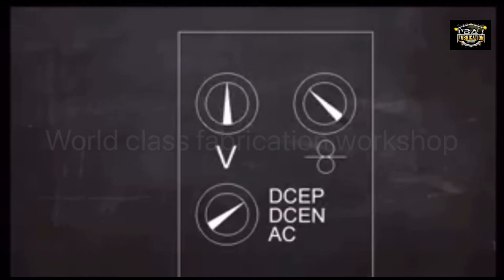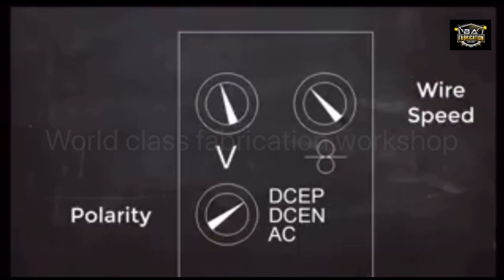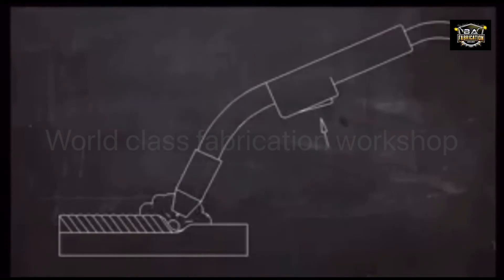In flux-core welding, all of the machine controls are set on the machine itself. The most important of these are polarity, wire speed, and voltage. The trigger on the gun is just an on-off switch.